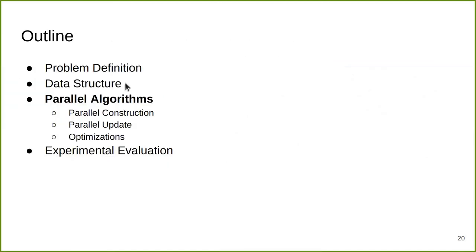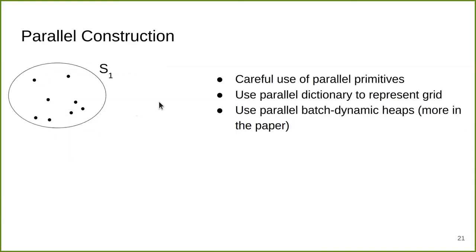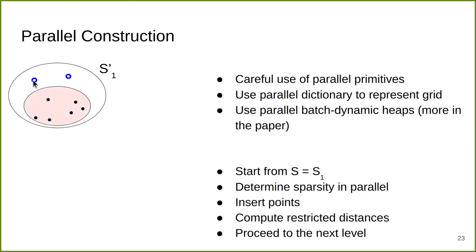Next, our parallel algorithms. For construction, we make careful use of primitives. We use a parallel dictionary to represent the grid in both theory and practice. We also design our own parallel batch dynamic heap for bookkeeping. For construction, we start with S1. We first construct a grid data structure using the dictionary in parallel for all points in S1. Then for each point independently, we check its sparsity. The sparse points independently and in parallel compute their restricted distances, after which we use a batch insertion into our parallel batch dynamic heap. The denser points get processed again in the next level.